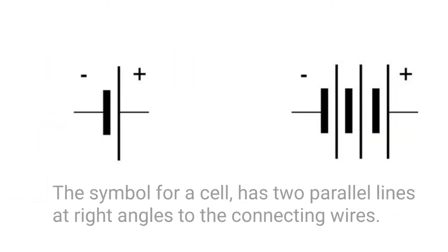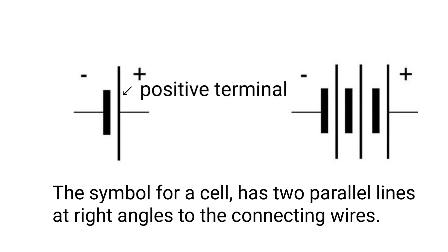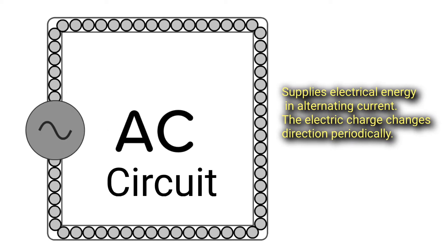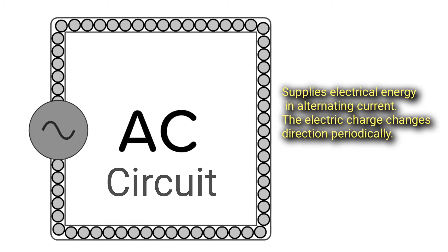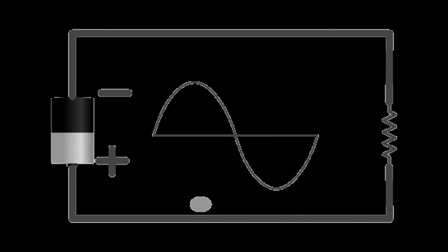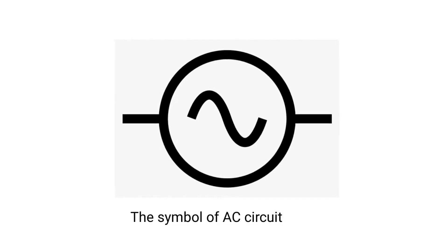The symbol for a cell has two parallel lines at right angles to the connecting wires. The thinner line marks the positive terminal of the cell, and the thicker shorter line marks the negative terminal. AC circuit supplies electrical energy in alternating current, where the electric charge changes direction periodically. The symbol is a circle with a wavy or sinusoidal line inside.